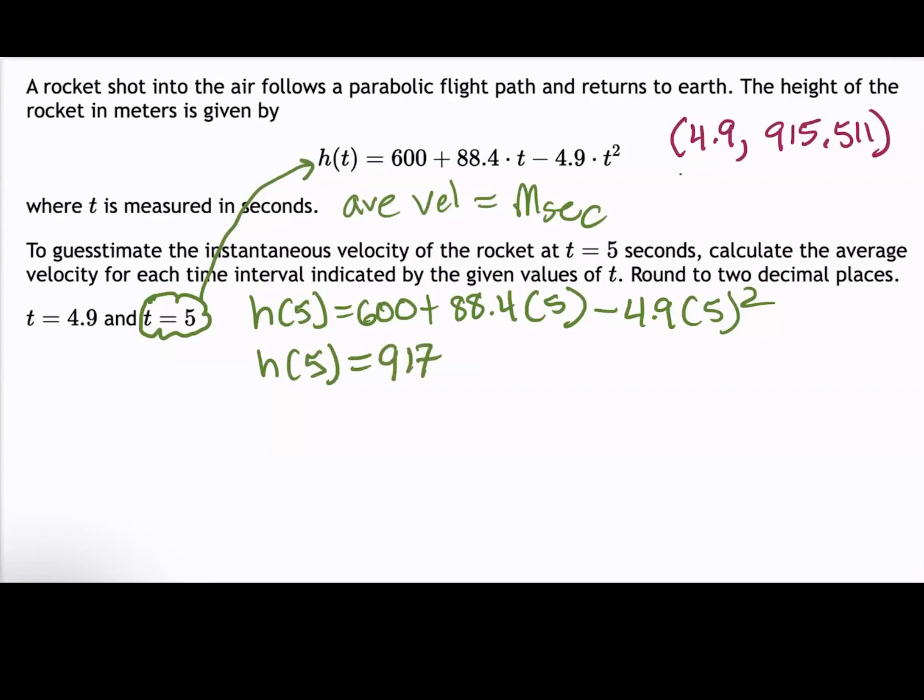So for our second point, we have an input value of 5 and an output value of 917.